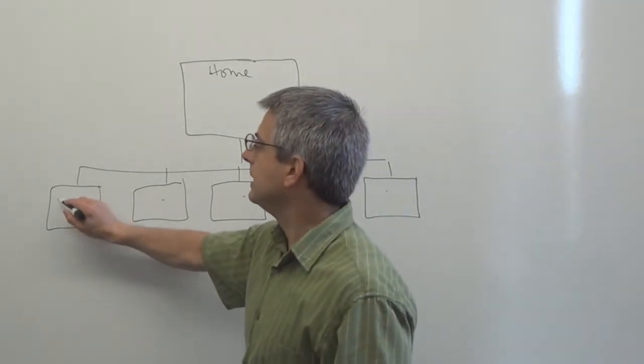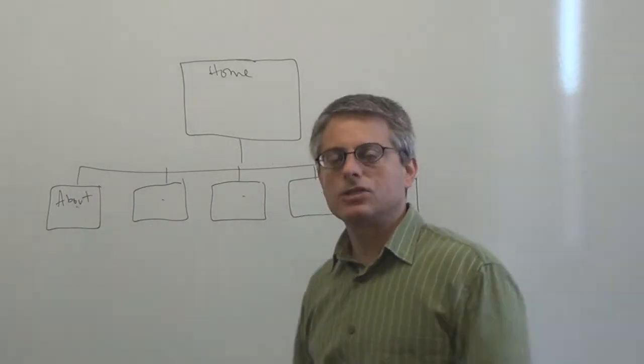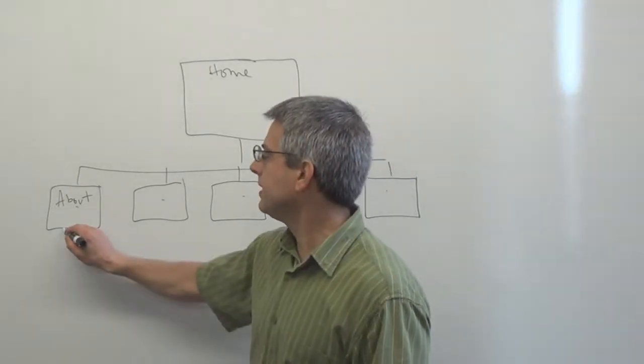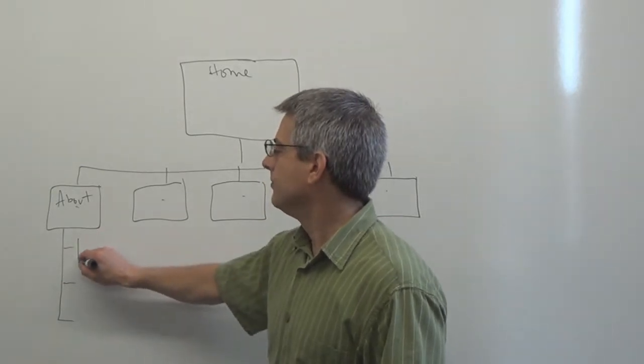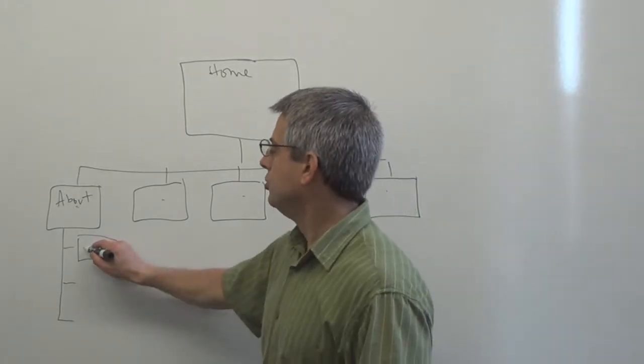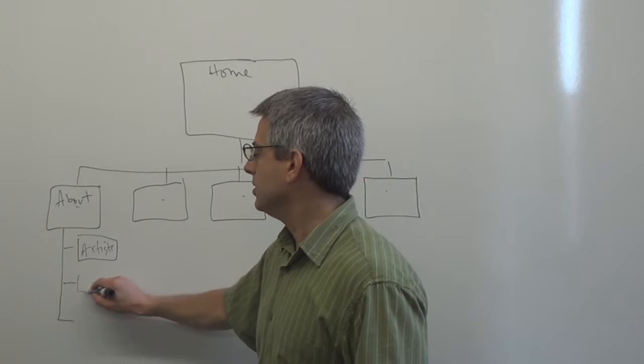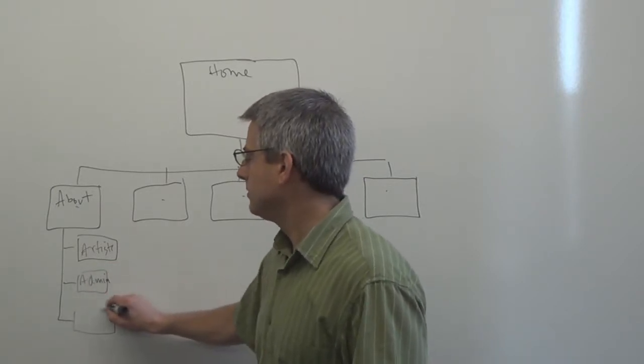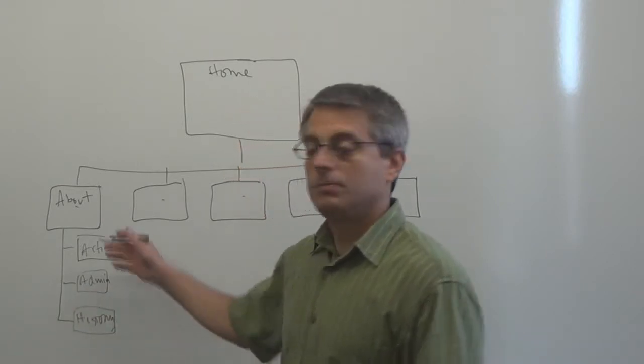Those are those points on your website where you see the content areas broken out where you then go into subsections of those areas. And let's just say simply that this one over here is about, like we say about the CSO or about your organization. And within that area, you will have subsections. For, let's just use for this example, an orchestra structure, you might have the artists, the administration, and the history.